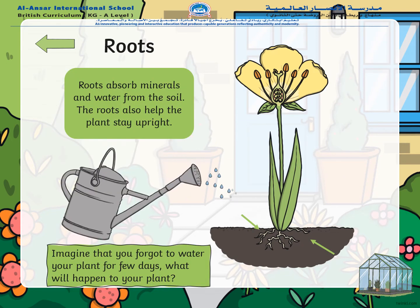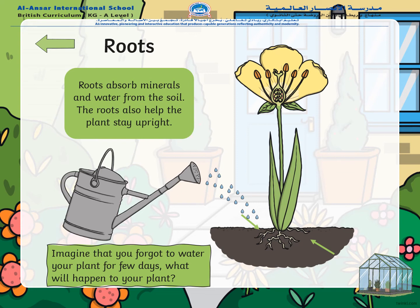Now we have roots. The roots of the plant grow under the ground. The roots absorb minerals and water from the soil, and they also help the plant to stay upright. Imagine that you forgot to water your plant for a few days — what will happen to your plant?